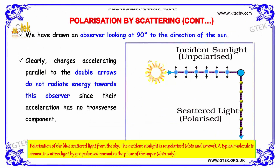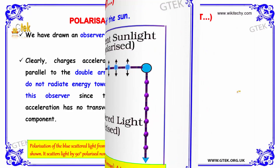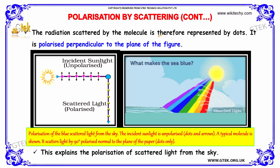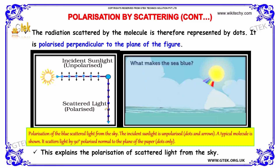We have drawn an absorber looking at 90 degrees to the direction of the sun. Charges accelerating parallel to the double arrows do not radiate energy towards this absorber, since their acceleration has no transverse component. The radiation scattered by the molecule is therefore represented by dots — it is polarized perpendicular to the plane of the figure. This explains the polarization of scattered light from the sky.